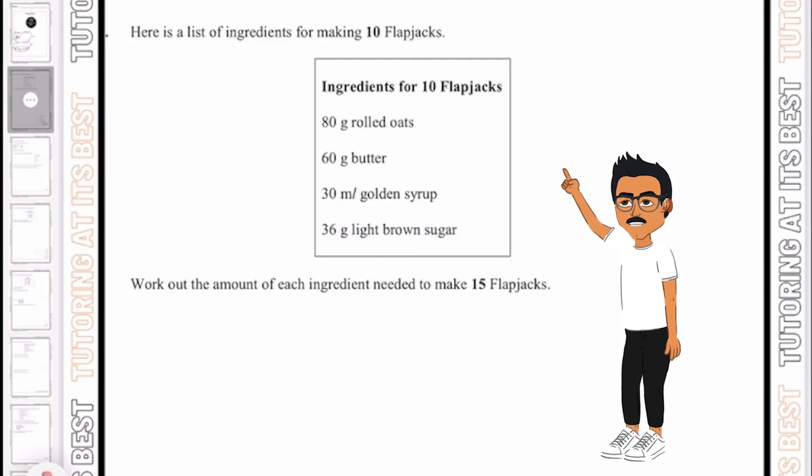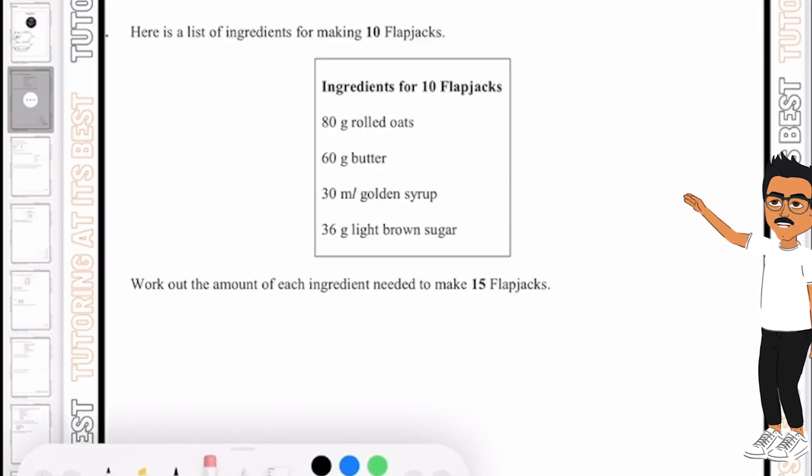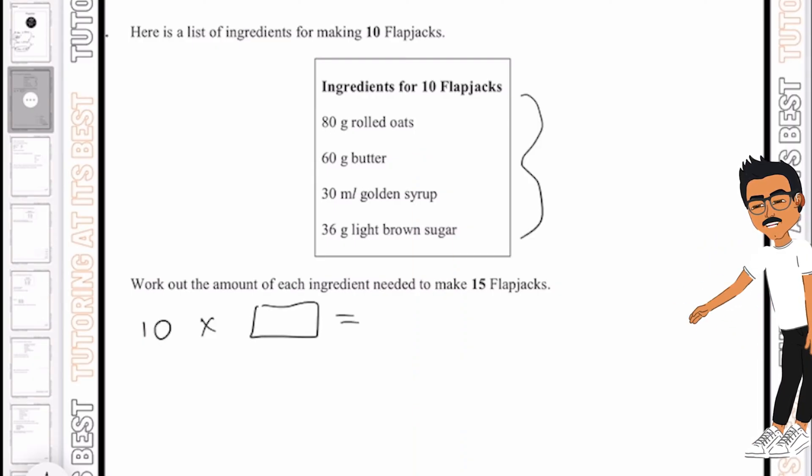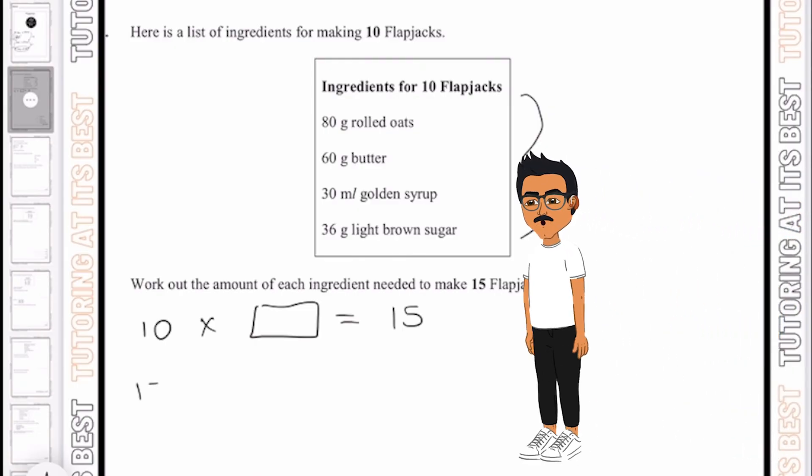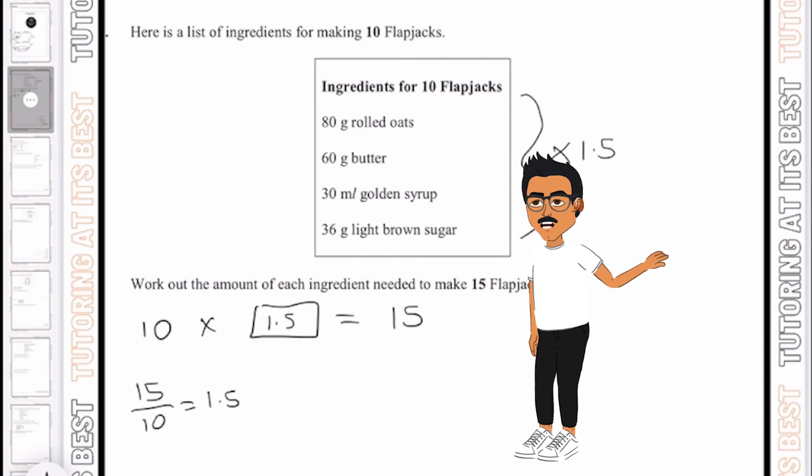So there's two ways you can do this. You can either divide these ingredients by 2 and then add them on to the 10 flapjacks which gives you 15, or we can find the multiplier. I'm going to find the multiplier. So that's 10 multiplied by something which equals 15. If I take 10 to the other side I will have 15 divided by 10 which gives me 1.5. Which means I need to multiply all of my ingredients by 1.5.